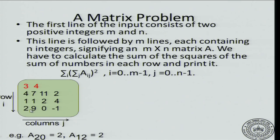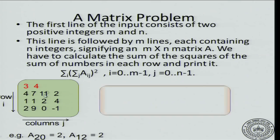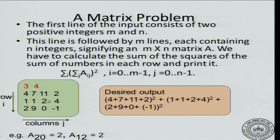Similarly, a[1][2] is row number 1, column number 2, which is also 2. So the desired output is: (4 + 7 + 11 + 2) squared, plus the next row's squared sum, and so on.